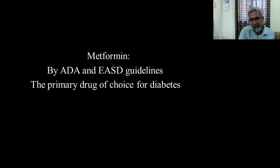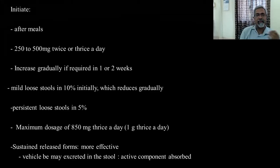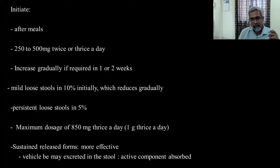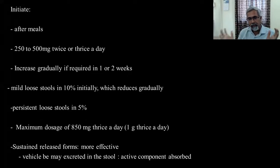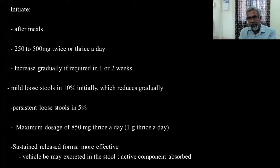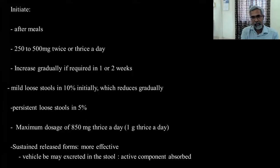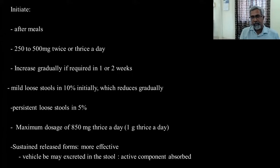The ADA and European guidelines confirm metformin as the primary drug of choice for type 2 diabetes. It should always be given after meals, because bioavailability is increased 30% postprandially — it's not so much about preventing gastritis. Increase the dose gradually: giving one gram twice a day straight away can cause gastritis in 60–70% of patients. Mild diarrhea is reported in about 10% initially but disappears in most; persistent loose stools occur in about 5%, and drug withdrawal is required in only about 2%. The maximum dose is ideally 850 mg twice a day, but 1 gram twice a day is commonly used in India and is quite safe.